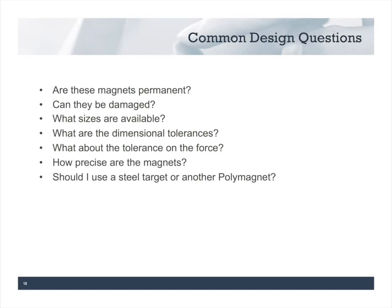The last frequently asked question for today is: should I use a steel target or another polymagnet as a target? Using a steel target is typically less expensive and may let you make your target thinner. However, steel targets are somewhat limited in the gap they can handle and in functionality. If you want alignment features, release behavior, maximum shear force, or maximum engagement distance, you're going to want to use a polymagnet-to-polymagnet system.